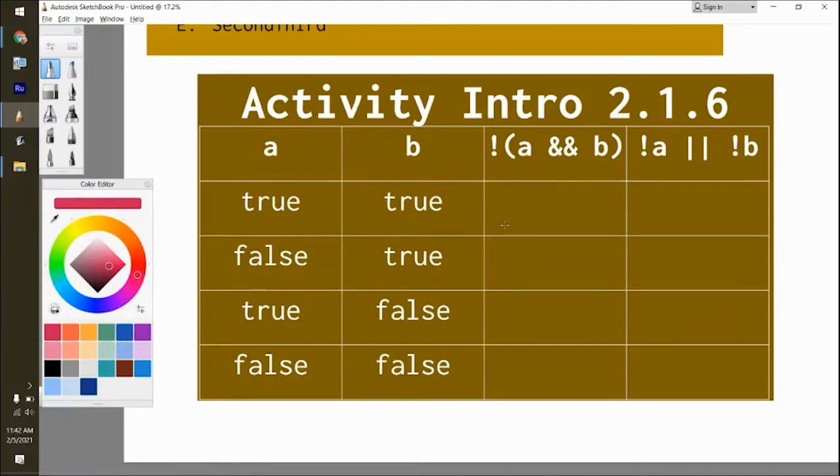So that first one, true and true. And there's a not in front of it. So not true and true. What should go here? Just yell it out. We're all friends. False. I'm just going to write it down. What would go here then? False.